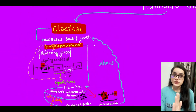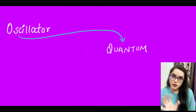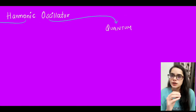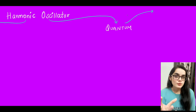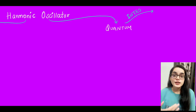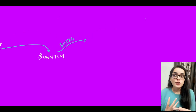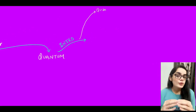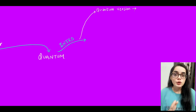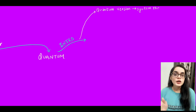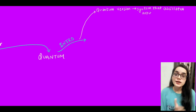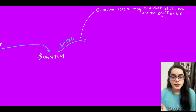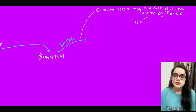Now let's discuss the second part — quantum harmonic oscillators. Quantum means we are describing oscillation in terms of small systems, like how atoms vibrate and things at the quantum level. Oscillation is still a system going around its equilibrium position, but this is now a quantum harmonic oscillator.